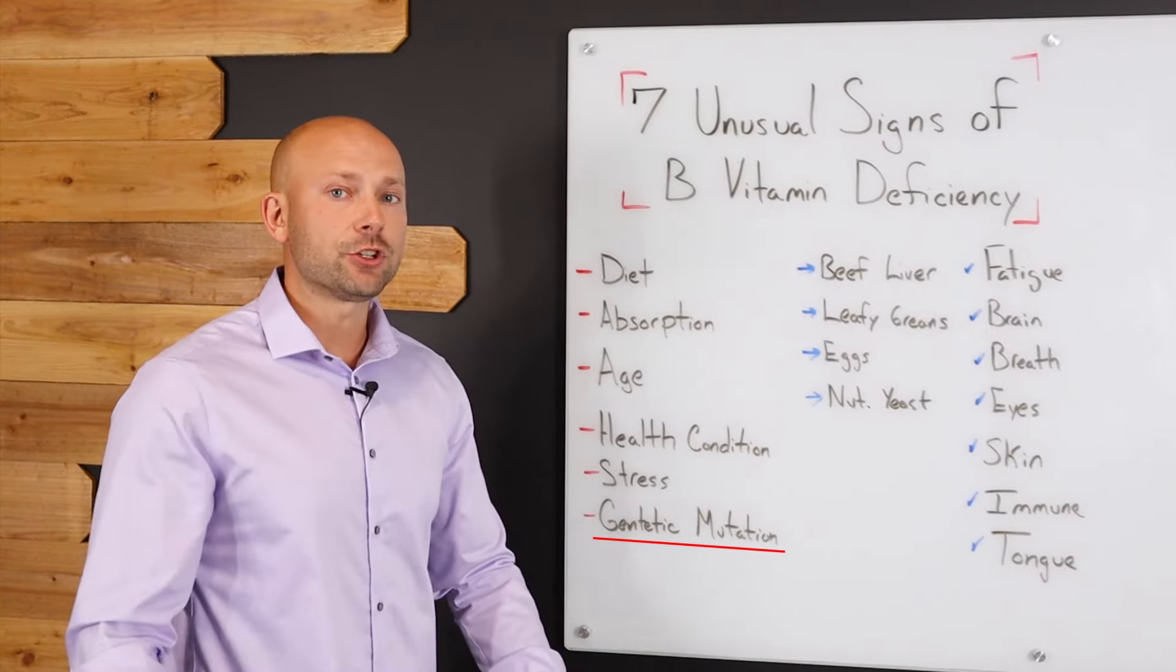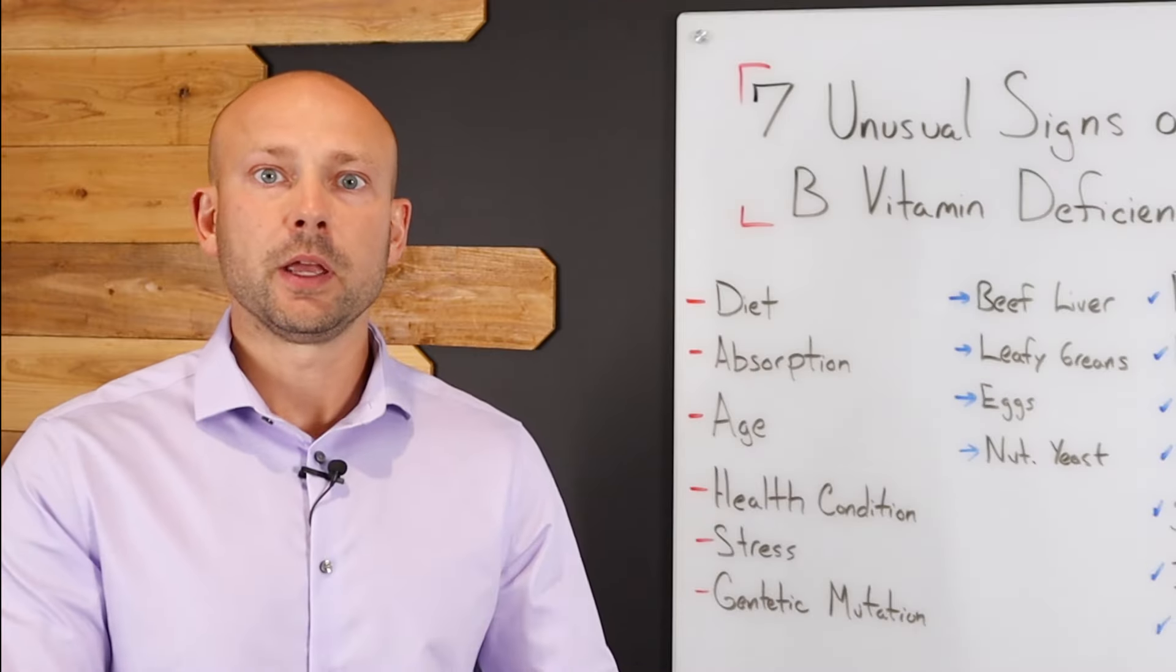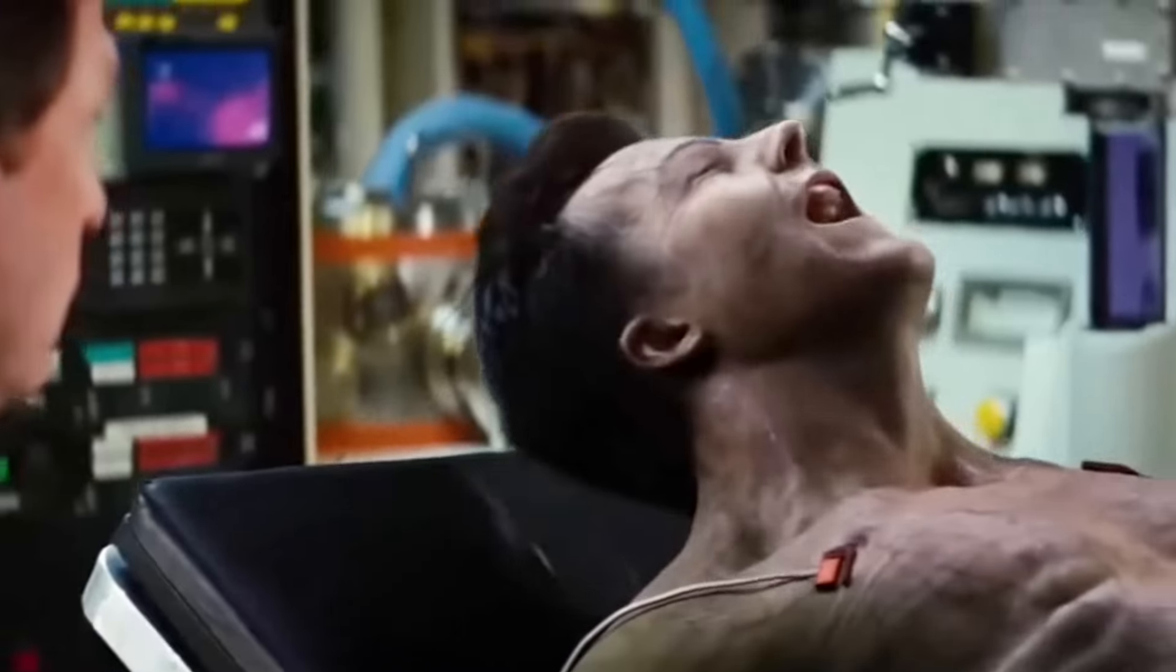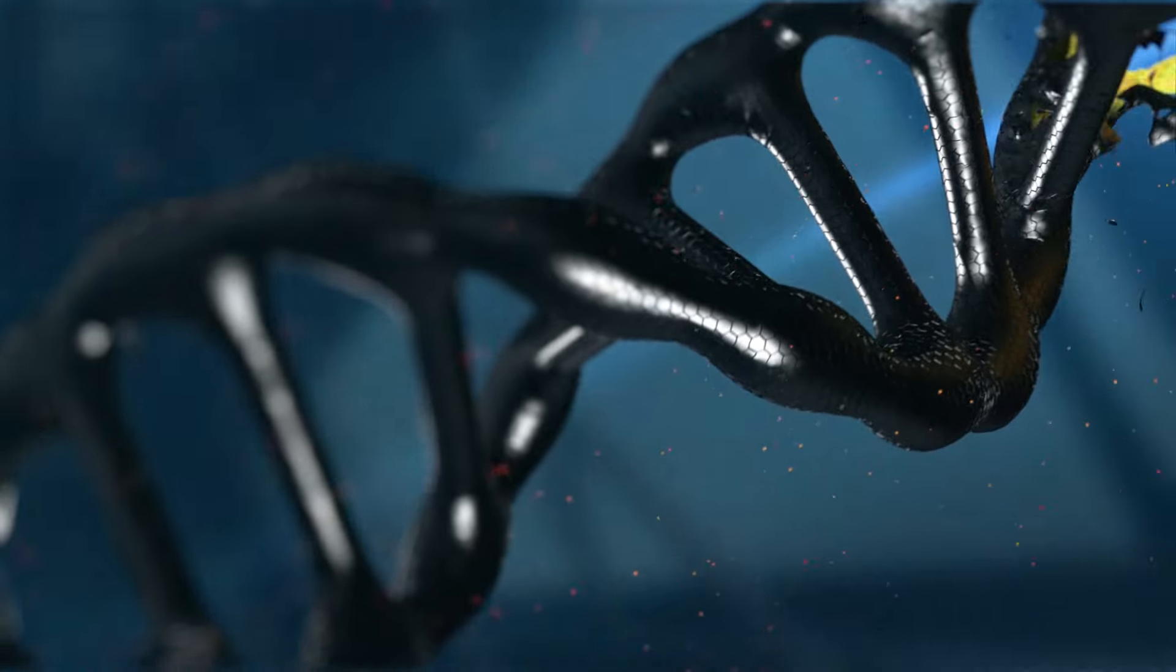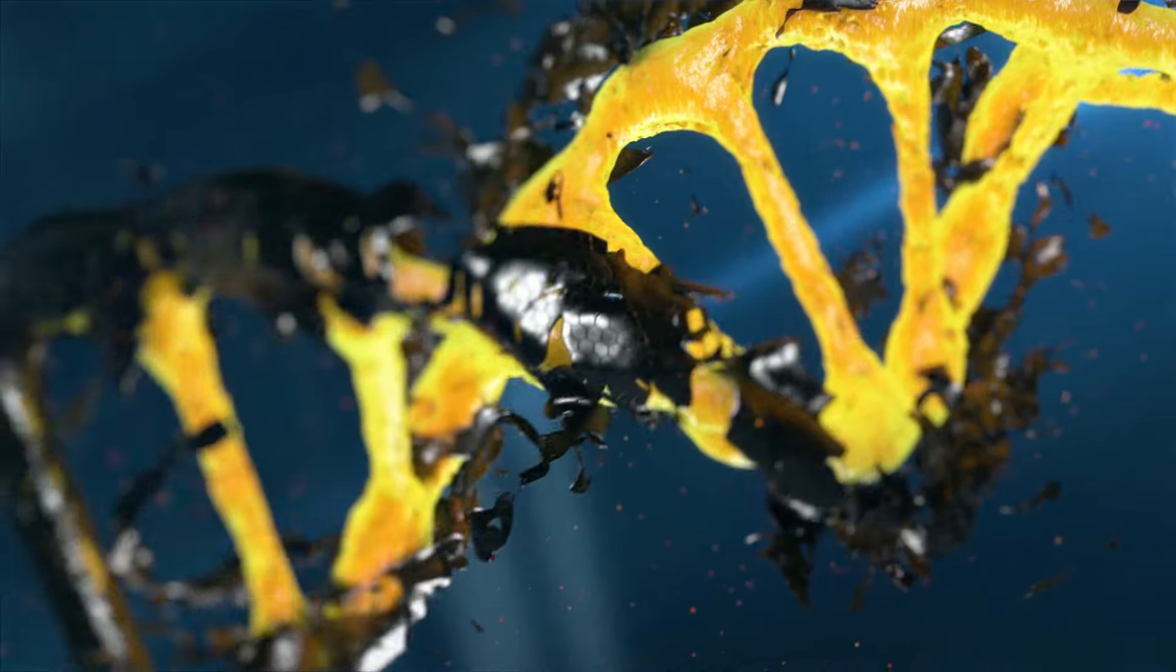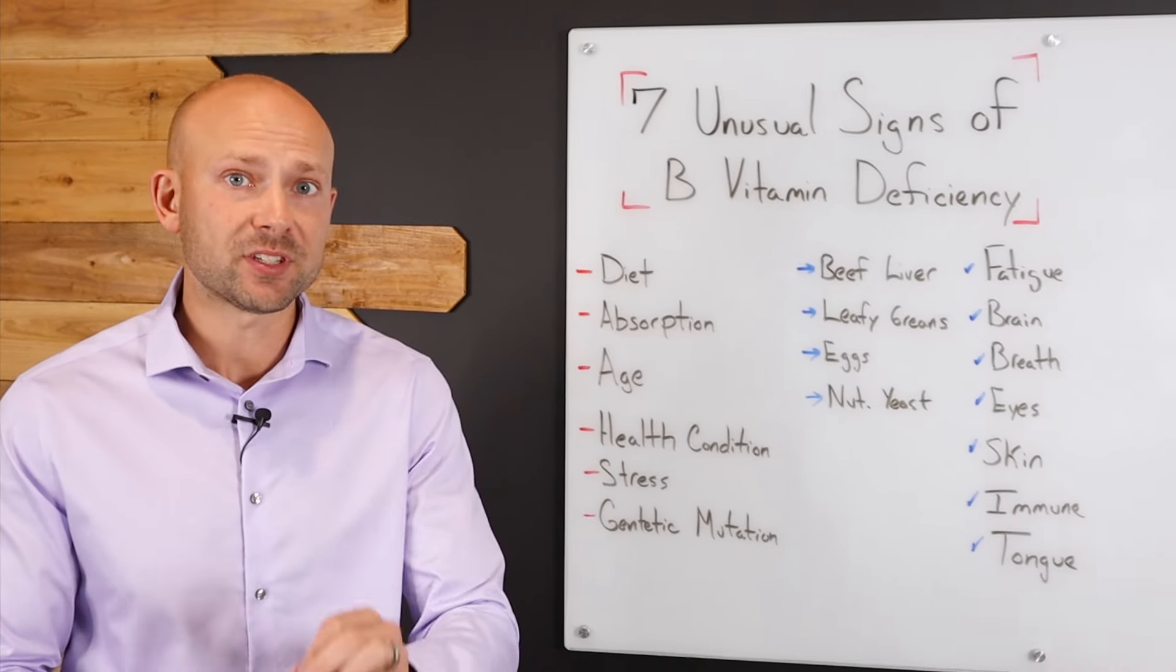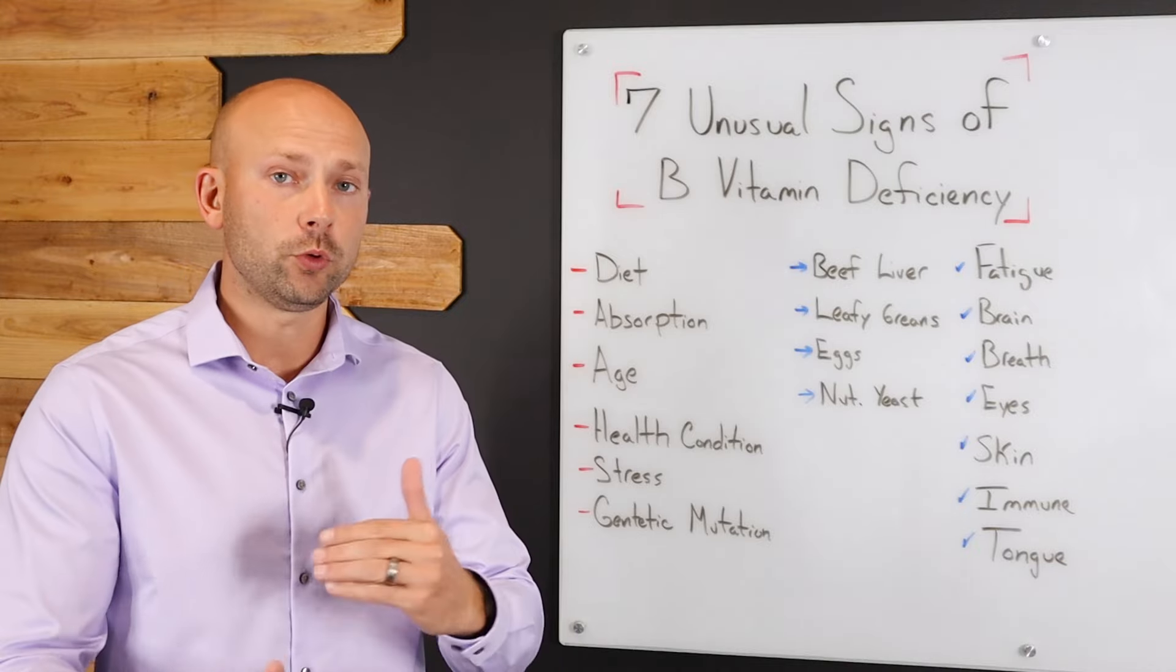And then genetic mutation, meaning literally your genes are mutated and you're not absorbing them and utilizing them properly. And this is something that's common too. It doesn't mean that you're some freak of nature. All of us have gene mutations. It just depends on which ones we have, which would determine what kind of problems we're going to face. And some of us may have ones that affect the B vitamins. Now, let's take a look at some of the top symptoms that you're going to see if you have a B vitamin deficiency. And then I want to talk about some food sources as well.